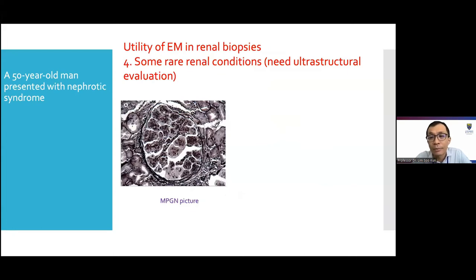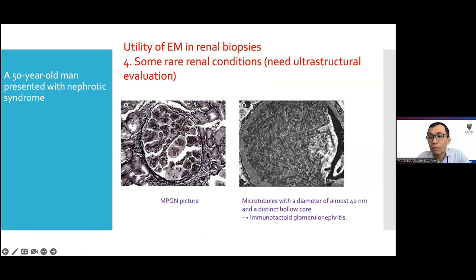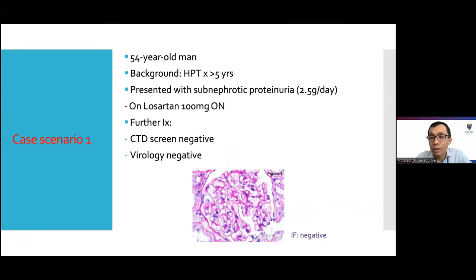Another good example of how we utilize electron microscopy is to diagnose certain rare renal conditions requiring very detailed ultrastructural evaluation. A man with nephrotic syndrome had light microscopy showing an MPGN picture. But on electron microscopy, we could see microtubules with very distinct hollow cores, giving us a diagnosis of immunotactoid glomerulonephritis. I want to finish my presentation by showing two recent case scenarios where electron microscopy helped us in clinical management.